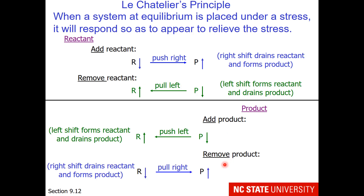I can also remove product. Removing product involves pulling the reaction to the right. Whenever a reaction goes to the right — whether because we removed product or added reactant — the same thing occurs: reactant decreases and product increases. Those are the four ways to impact a reaction with Le Chatelier's Principle.